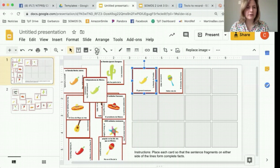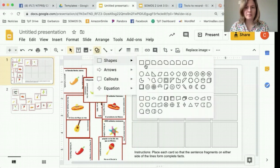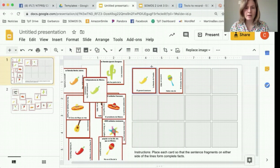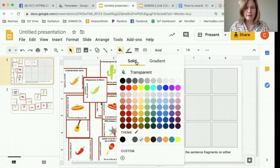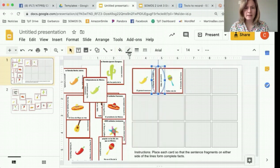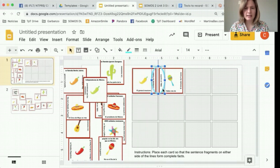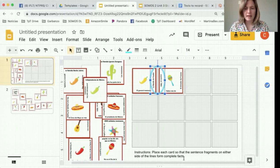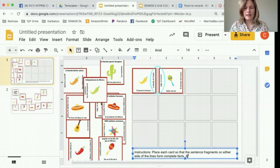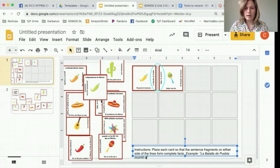So right here you'll see it says La Batalla de Puebla ocurrió en mil ochocientos sesenta. To make it even more clear for students, I might add a shape like this. I'll draw a shape around these two here. I'll make the fill transparent, I'll make it an obvious highlight color, get nice and thick so that students can see it. And then right here I'll write Example: La Batalla de Puebla ocurrió en mil ochocientos sesenta.